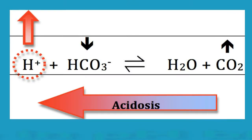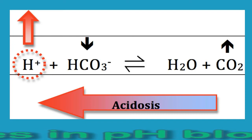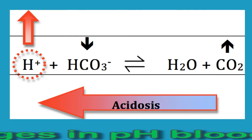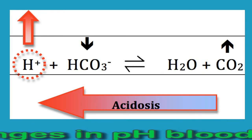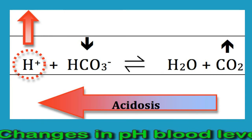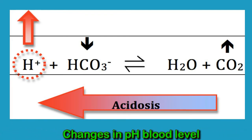Certain situations and medical conditions can mean that the body is unable to keep blood pH within the healthy range. The pH of the blood can change in both directions. Acidosis occurs when the blood is too acidic, with a pH below 7.35. Alkalosis occurs when the blood is not acidic enough, with a pH above 7.45. There are four main ways in which blood pH can change.